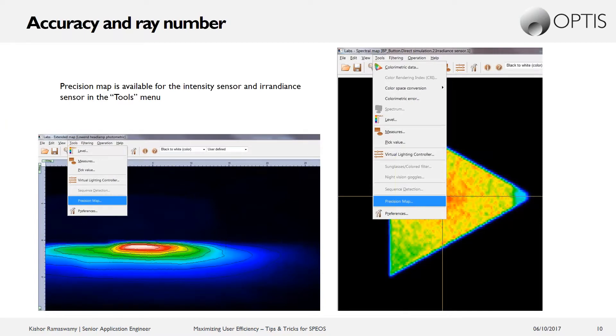So we have a tool inside of SPEOS for assessing the precision of a particular simulation. This tool is called the precision map. It's available in both the intensity sensor and the irradiance sensor in the tools drop-down menu. So you can see in these slides where it's located. The precision map essentially gives us a metric which tells us how many rays are integrated into each pixel and how much we can trust a particular simulation result.